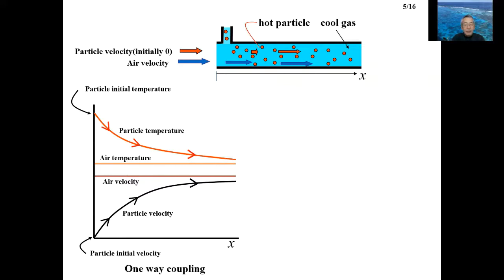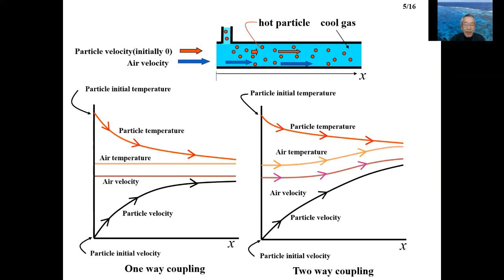In the two-way coupling, the air is also affected by the particles. The air is affected by hot particles and its temperature rises as it goes downstream. As a result, the air density decreases downstream and accordingly the air velocity increases. Therefore, the particle velocity becomes larger in the two-way coupling than in the one-way coupling case.